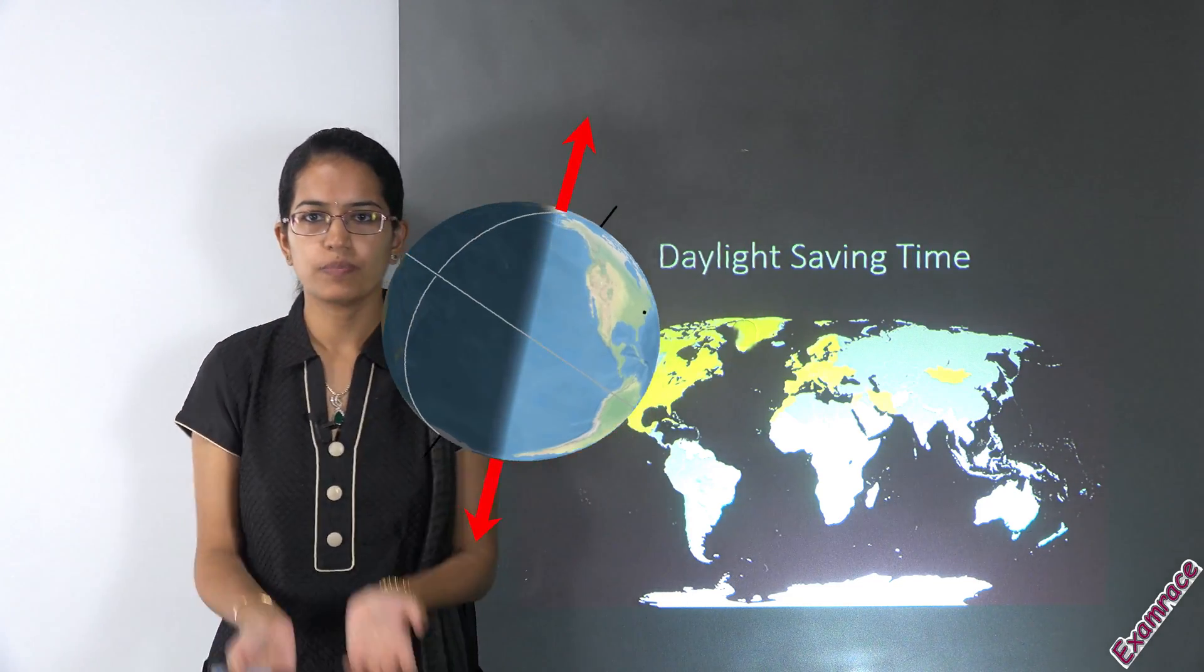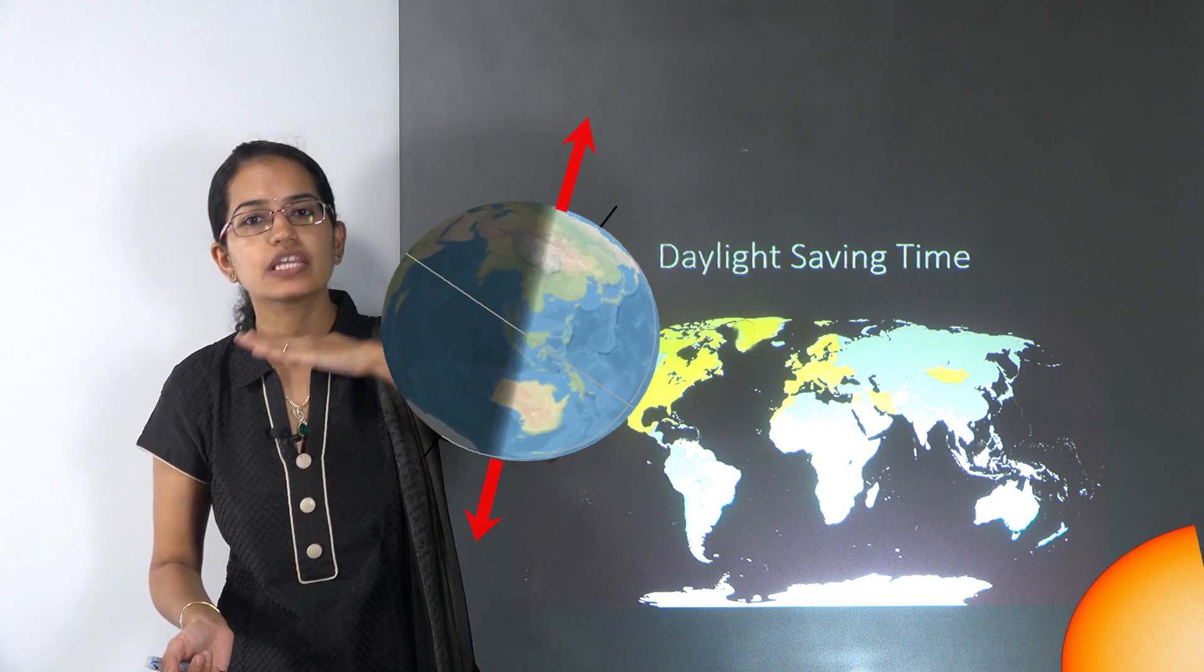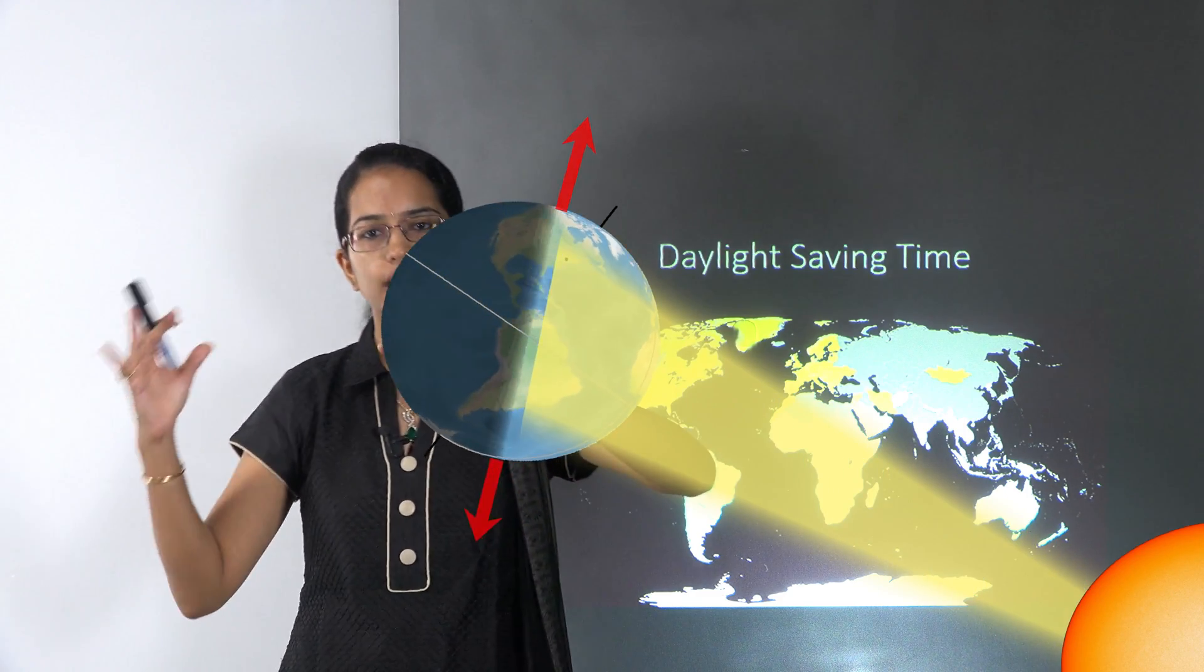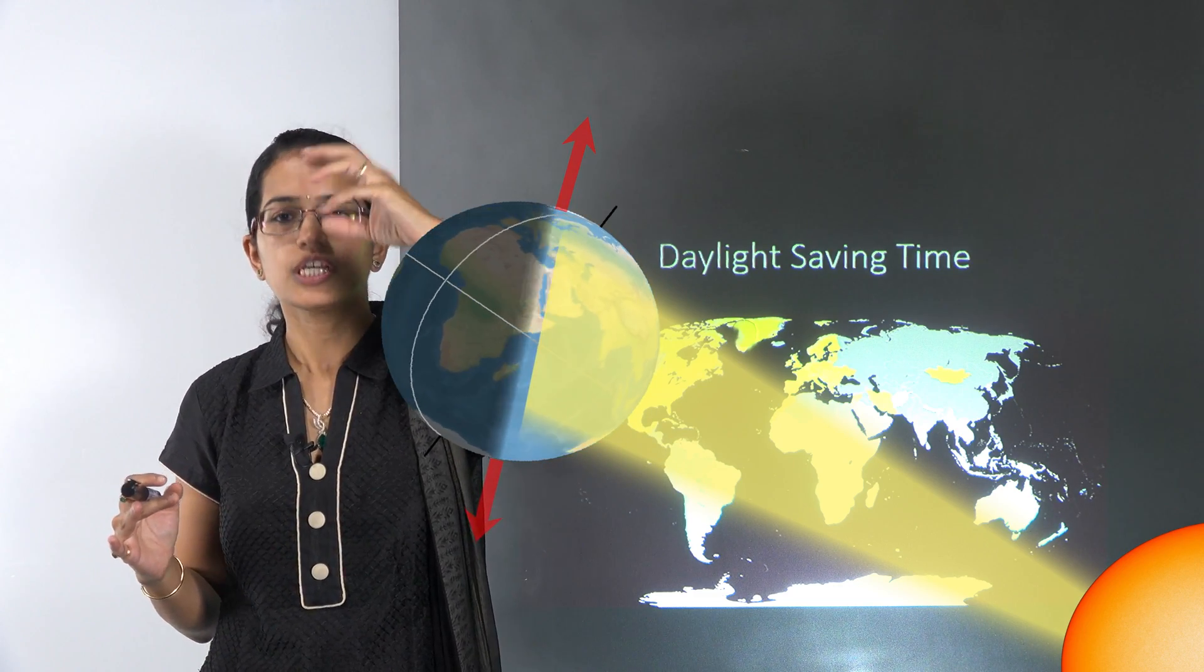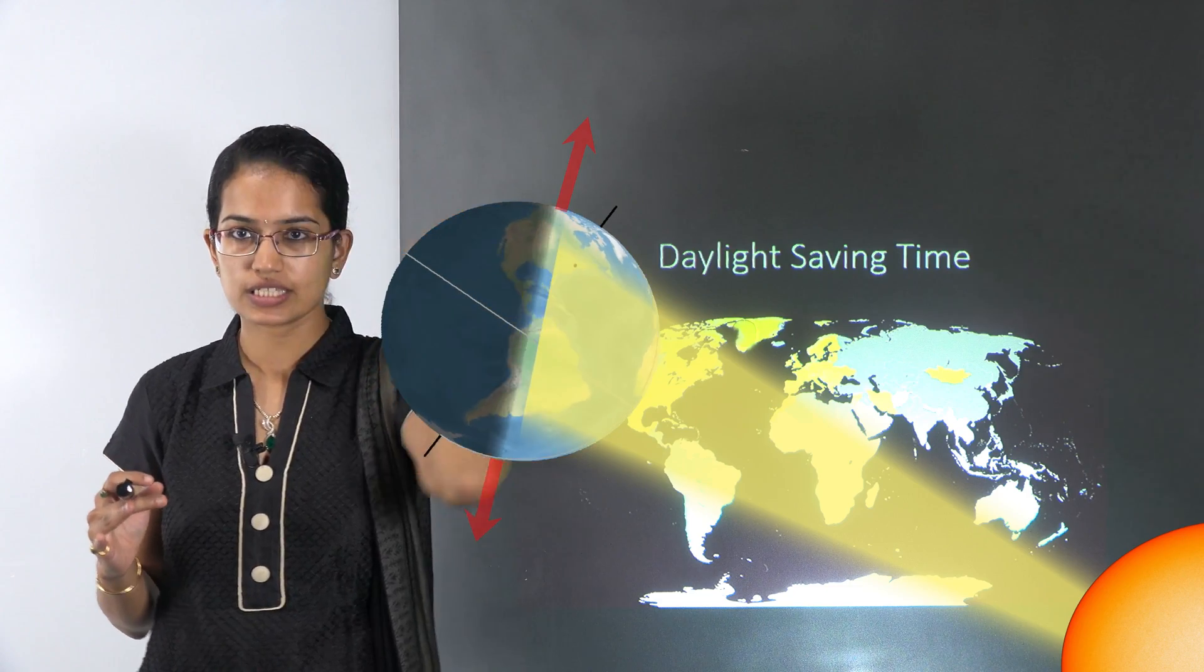On the globe equator we have equal days and equal nights because the sun rays are falling directly. However as we move towards poles we have 6 months of days and 6 months of night.